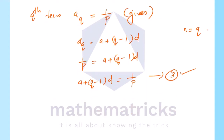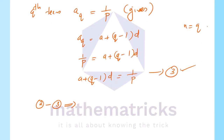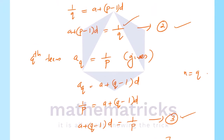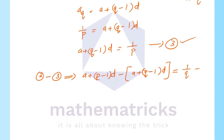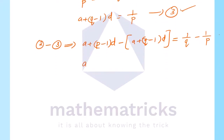Equation 2 minus equation 3: left side is [a + (p-1)d] minus [a + (q-1)d], and right side is 1/q minus 1/p. Expanding: pd minus d minus qd plus d equals 1/q minus 1/p.